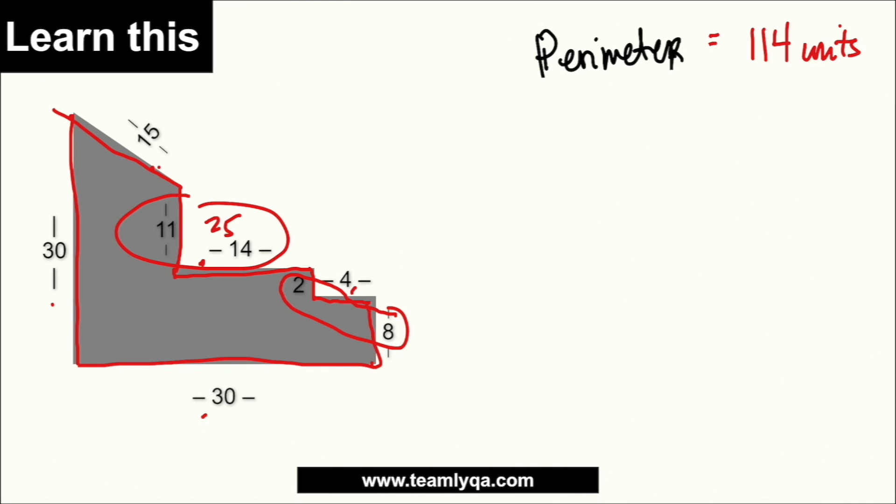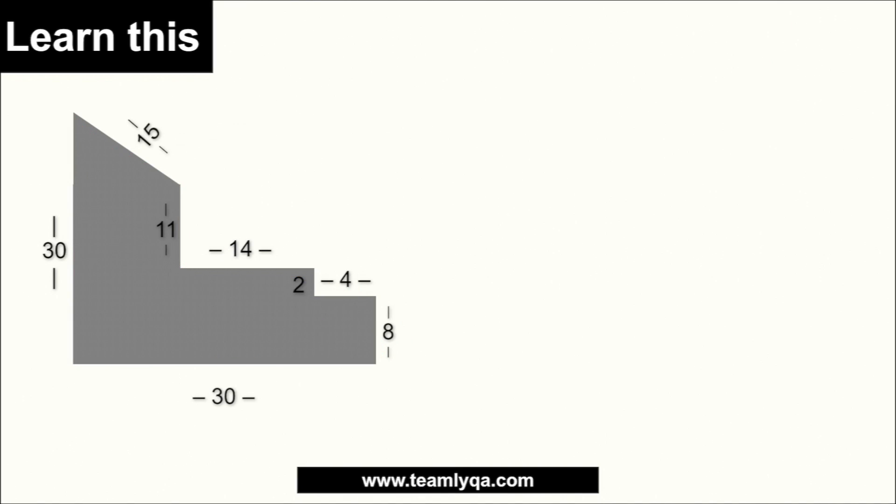Ang magiging medyo challenging dito is the area. So, sabi natin kanina, ang perimeter is 114 units. Ngayon, ano nga yun yung area niya? At dahil irregular na naman ang shape natin, we have to be creative sa division ng kung ano-ano yung mga shapes na nandyan.